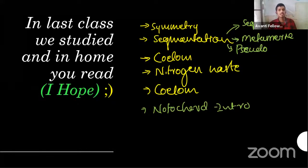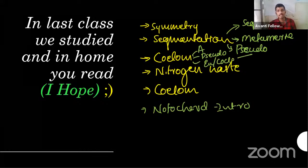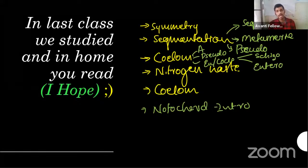For coelom, there are three types: acoelomate, pseudocoelomate, and true coelomate — also called eucoelom or coelom. Within that we also studied schizocoelom and enterocoelom, depending upon how development happens within the embryo.